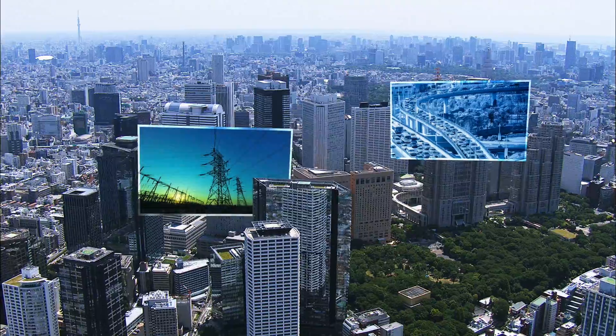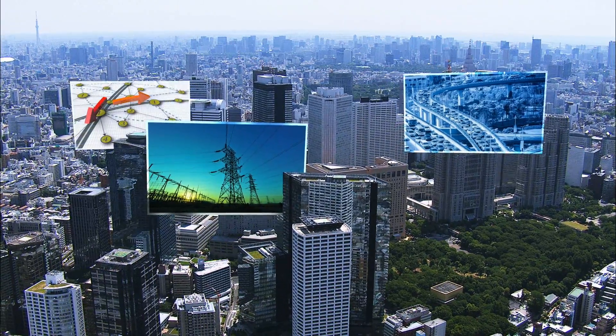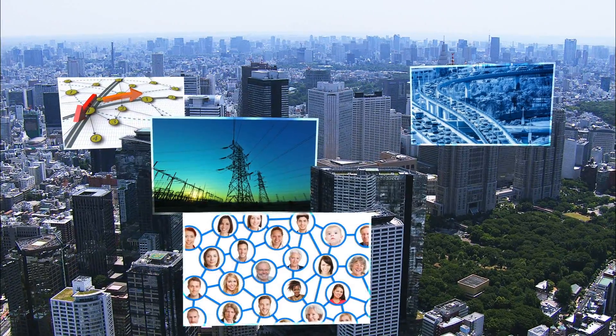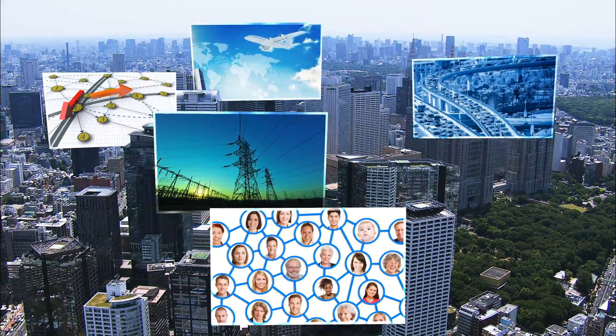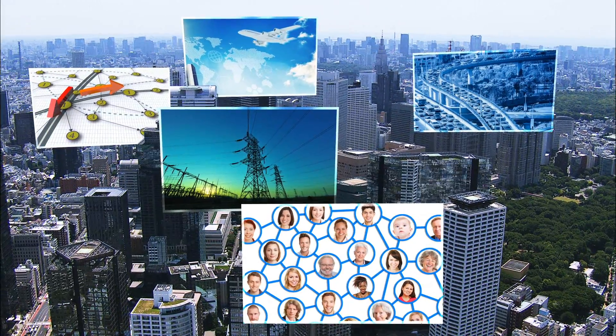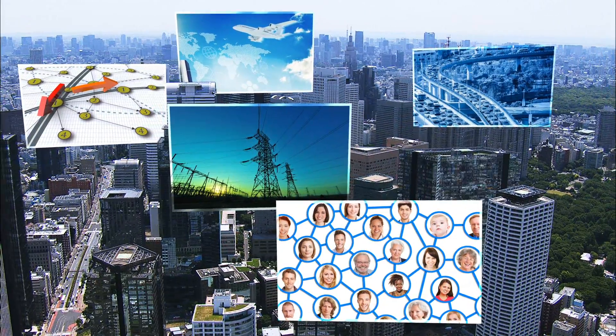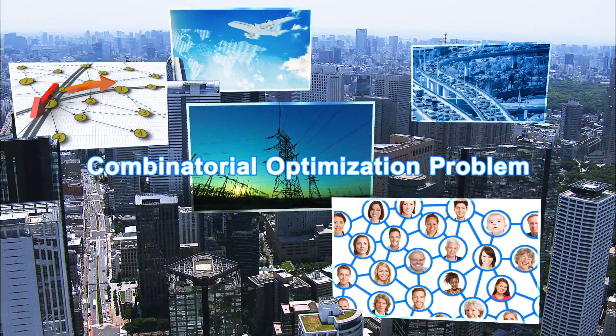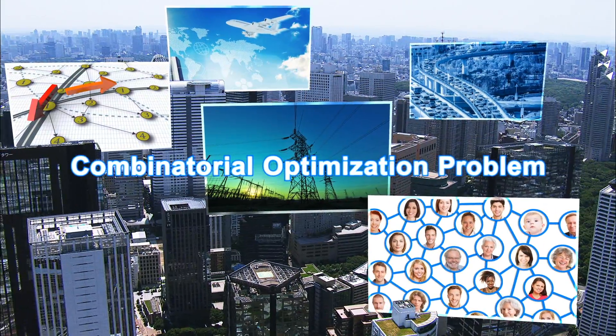Transport networks, power networks, and the Internet – the need to optimize these very complex networks is increasing. These tasks require us to solve combinatorial optimization problems.